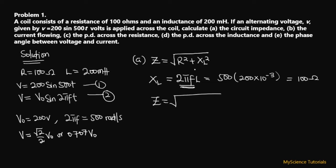Now we substitute back into the impedance formula. Z = √(R² + XL²) = √(100² + 100²) = √(10000 + 10000) = 141.4 ohms. So this is the impedance of the entire circuit.